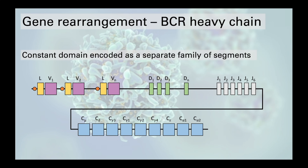Here we have a schematic of the gene encoding the heavy chain of the B cell receptor. We have variable regions V1 and V2, all the way through to Vn, each preceded by a leader peptide that directs the protein into the cell's secretory pathway. Then we have diversity regions D1 and D2 through to Dn, and for the heavy chain we have joining regions J1 to J6. Note that all the variable regions appear next to one another, then all the diversity regions, and finally all the joining regions.